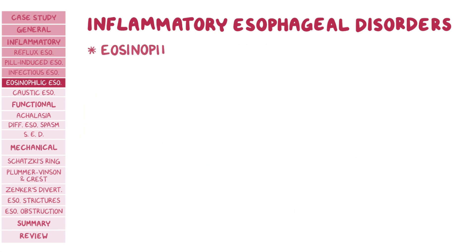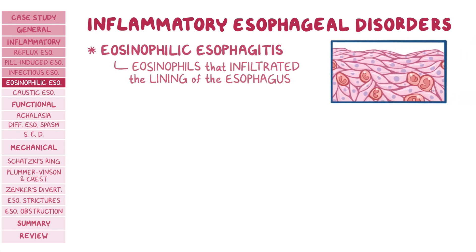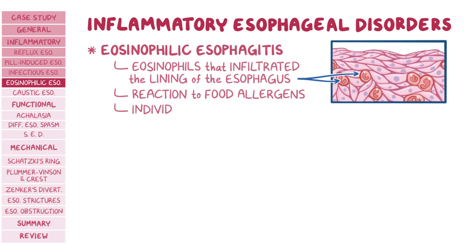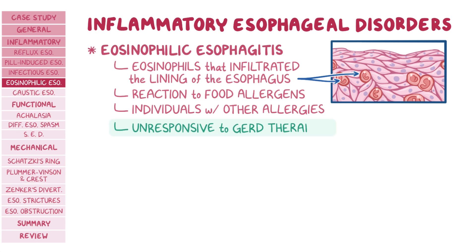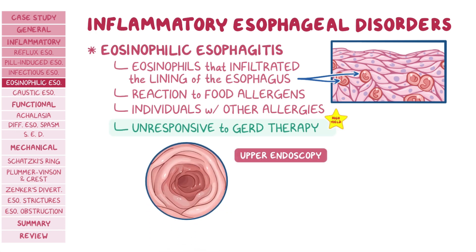Finally, we have eosinophilic esophagitis, also called allergic esophagitis, which is characterized by eosinophils that infiltrate into the lining of the esophagus. This happens as a reaction to food allergens and can lead to dysphagia and food impaction. It is most commonly seen in individuals who have other allergies, and a high yield clue is that their esophagitis will be unresponsive to GERD therapy. During upper endoscopy, it is characterized by linear furrows and esophageal rings, which are thin mucosal bands that surround the esophagus.